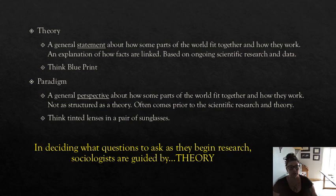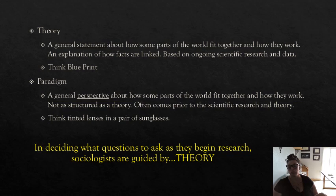Let's get into the new stuff: theory and paradigm. A theory is a general statement about how some parts of the world fit together and how they work. When you think about a theory, think blueprint — theories are a detailed explanation of how facts are linked, based on lots of research and data. Gravity is a good example. So you can think about a sociological theory as a blueprint for how the world fits together and how it works.